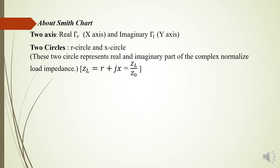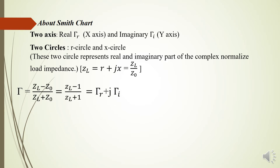The Smith chart has two types of circles: R circles and X circles. These two circles represent the real and imaginary parts of the complex normalized load impedance. If we divide the load impedance Z_L by the characteristic impedance Z_0, we get the normalized load impedance, represented as small r plus j small x. The reflection coefficient is expressed as (Z_L minus Z_0) divided by (Z_L plus Z_0), which simplifies to (z_L minus 1) divided by (z_L plus 1) after dividing by Z_0.